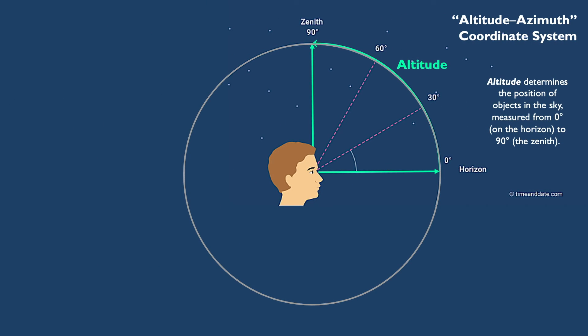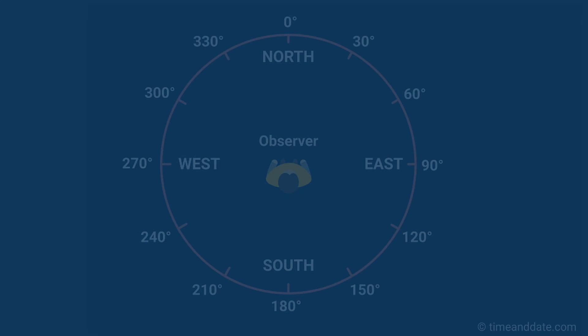The point directly beneath you, if you were able to see all the way through to the other side of the globe beneath your feet, is called the nadir. The coordinate that determines...